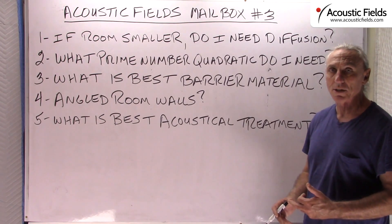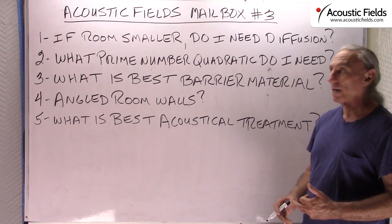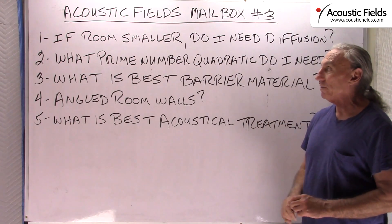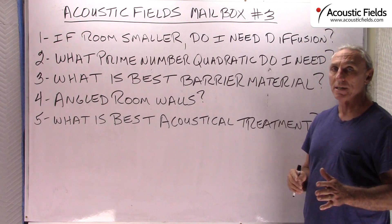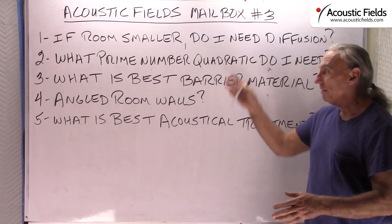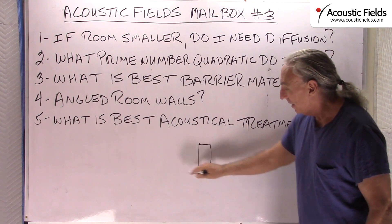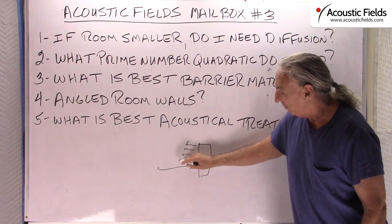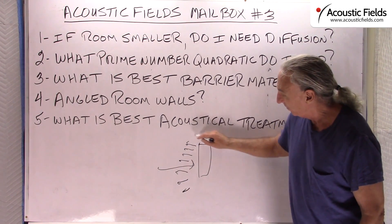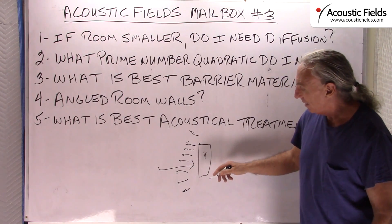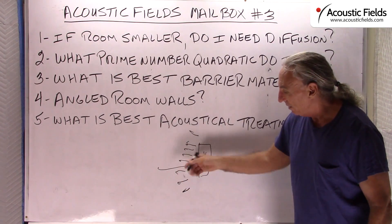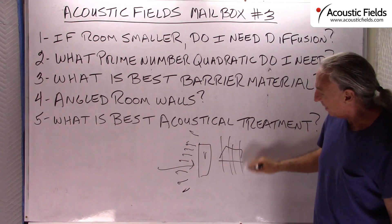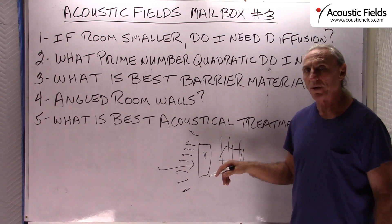Make sure your listening position, distance to the speaker, and front wall distances are correct. What prime number quadratic do you need? It depends on distance — how much distance you have between the diffuser and the listening position for the waveform to fully form. Think of your diffuser as a speaker: reflected energy comes in and goes out in little amounts of energy in a fan-like array. A vertical diffuser spreads energy horizontally, and a horizontal diffuser spreads energy vertically — the opposite of the physical orientation.